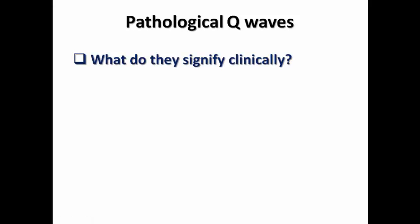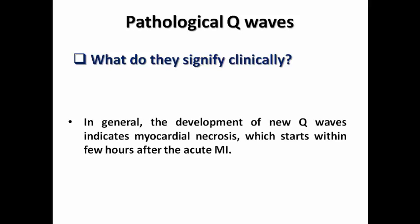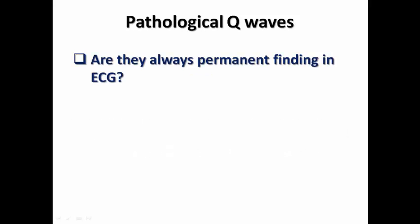Let's ask some questions regarding pathological Q-waves, because sometimes they raise a lot of question marks and may be mysterious. What do pathological Q-waves signify clinically? The development of new Q-waves occurs in the case of myocardial necrosis, which usually starts within a few hours after STEMI, or even within a few minutes sometimes. So pathological Q-waves equal myocardial necrosis.